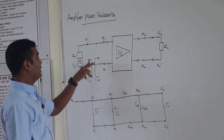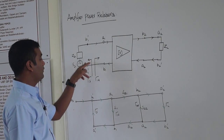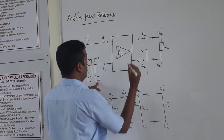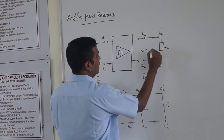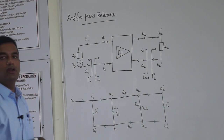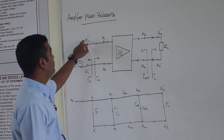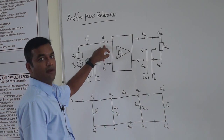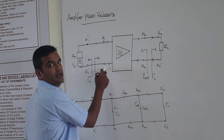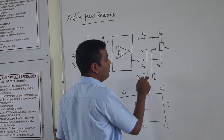Looking from the source side, one flow represents your source reflection coefficient and another represents your input reflection coefficient. Similarly, from the output side, one represents gamma_out and the other gamma_L. These are the four reflection coefficients. The amplified output at B2 is connected to the load, and some signal reflects back from the load, represented as A2.